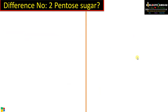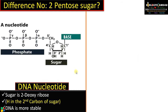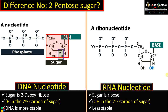Difference number two regarding pentose sugar. In the case of DNA, the sugar is deoxyribose — that means in the second carbon position there is hydrogen, without oxygen. That's why it is called 2-deoxyribose: a ribose sugar without oxygen at the second carbon position. Whereas in the case of ribonucleotide, it is a ribose sugar — as you can see, in the second carbon position there is an OH group.